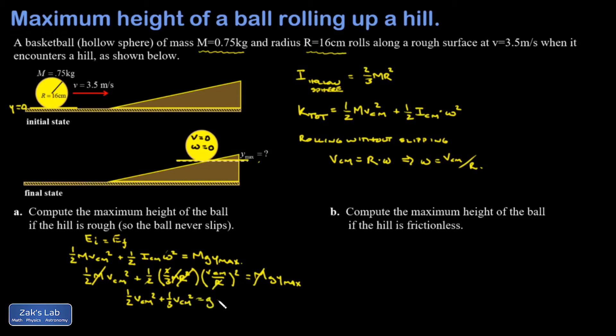I have one half v center of mass squared plus one third v center of mass squared equals g times y max. That thing on the left is three sixths plus two sixths, so that's five sixths v center of mass squared equals g times y max. Just a little bit of algebra and I can solve for y max.